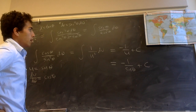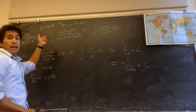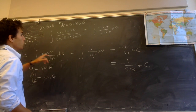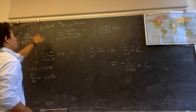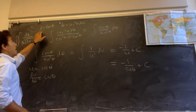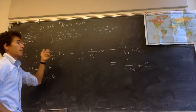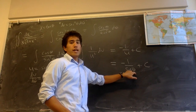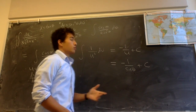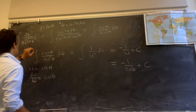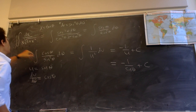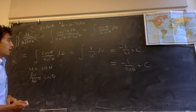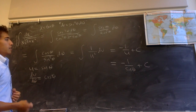Now we need to back-substitute in terms of x and theta. It's a little tricky because we wrote x as a function of theta — x equals tangent theta — rather than theta as a function of x. We could say theta equals arctangent of x, giving negative 1 over sine of arctangent of x, but that's not easy to work with, especially for a definite integral. So we want to write sine theta in a different way.